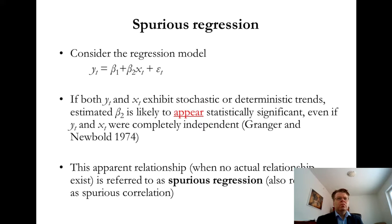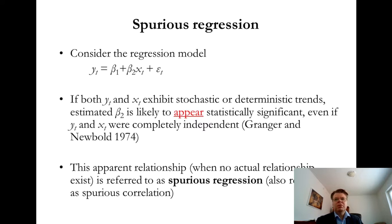But of course, it might be that sometimes we are actually interested not just in the change, but in the levels of the variables and how those are connected, even if we have some growth trends — for example, unit root processes. So the question is: what can we do in order to not fall into this naive spurious regression problem?